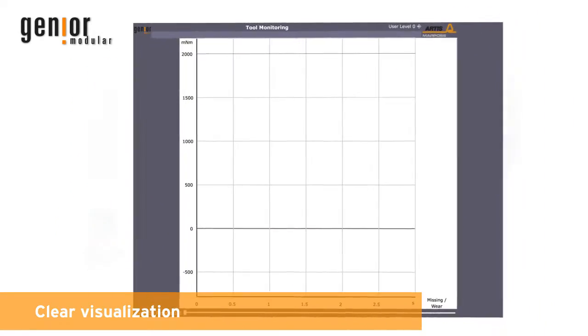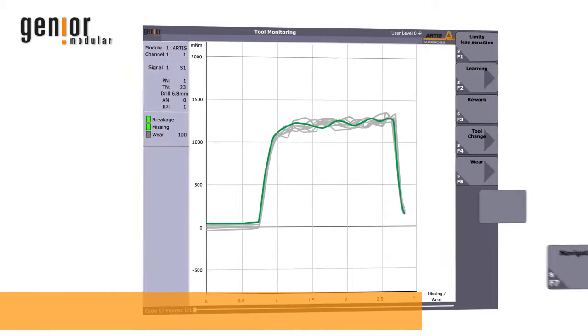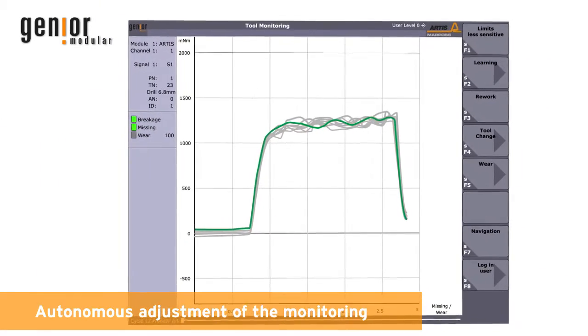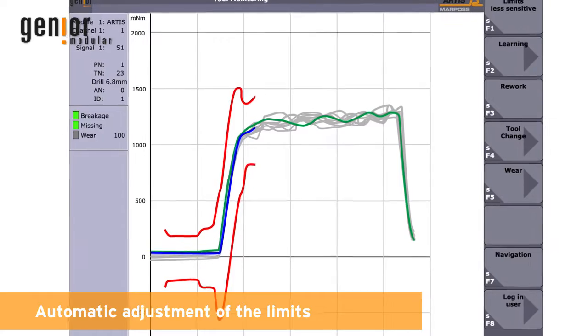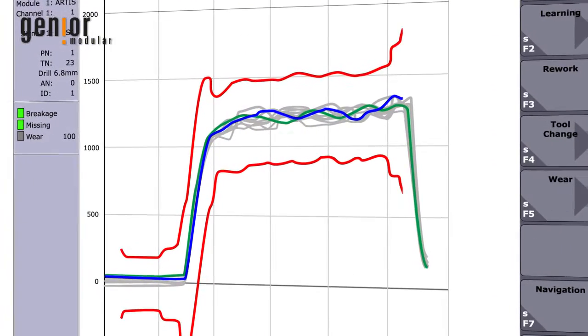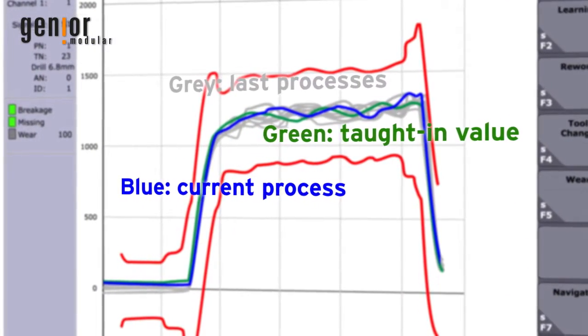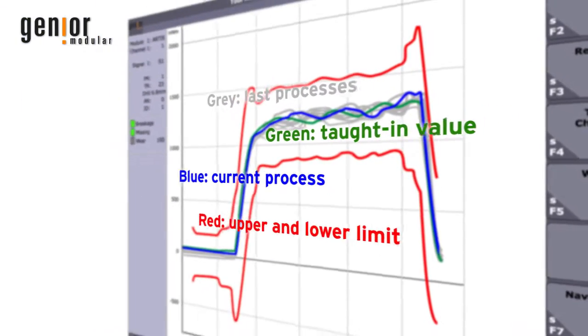The visualization software as part of the package displays the processes clearly. Ideally, the current blue curve is identical with the green teaching curve. The alarm limits are illustrated in red.